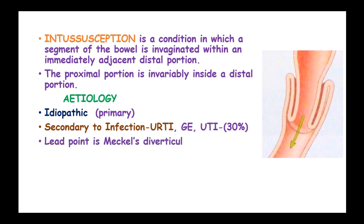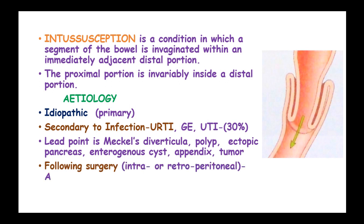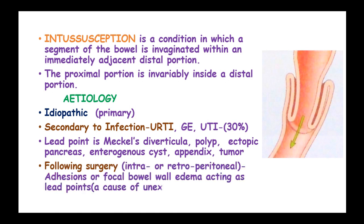Lead points include Meckel's diverticulum, polyp, ectopic pancreas, enterogenous cyst, appendix, or a tumour. Intussusception can also occur following surgery, such as intra- or retroperitoneal adhesions or bowel wall edema acting as the lead point, and these are the main causes of intestinal obstruction postoperatively.